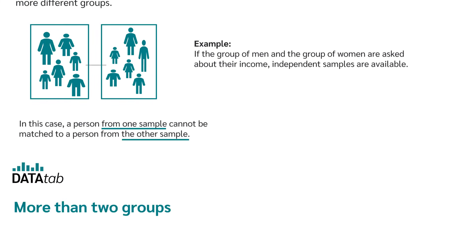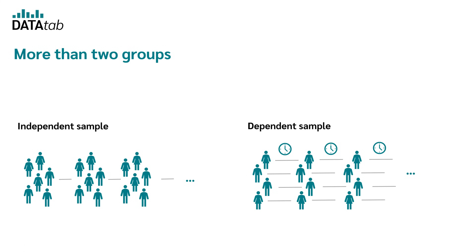In the case of both independent and dependent samples, it's also possible that there are more than two groups or samples. The important thing is that in the case of an independent sample, the individual groups or samples have nothing to do with each other, and in the case of dependent samples, one respondent occurs in all groups.